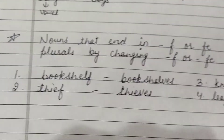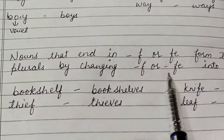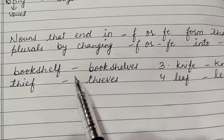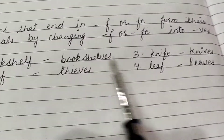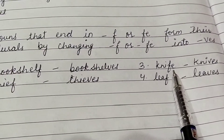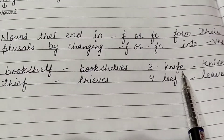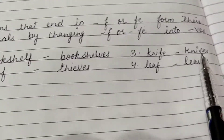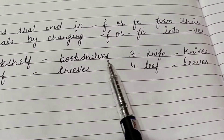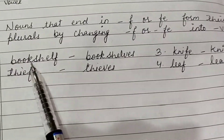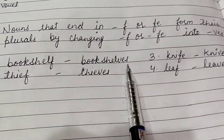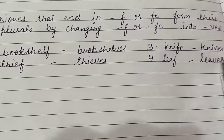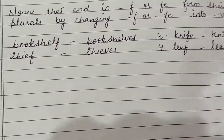Nouns that end in -f or -fe form their plural by changing -f or -fe into -ves. For example: bookshelf → bookshelves, thief → thieves, knife → knives, leaf → leaves.